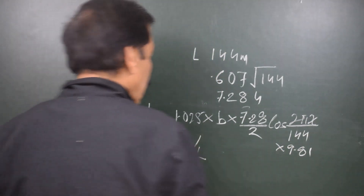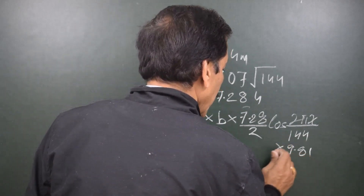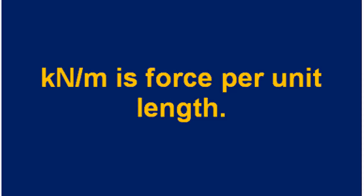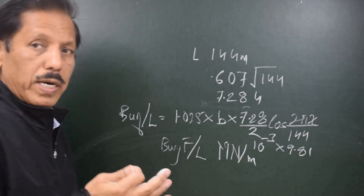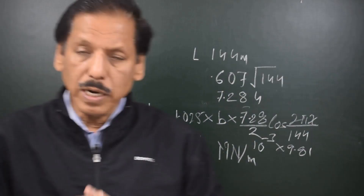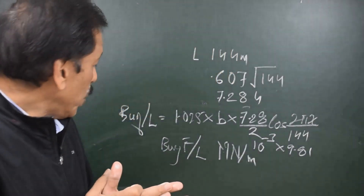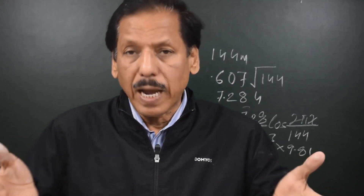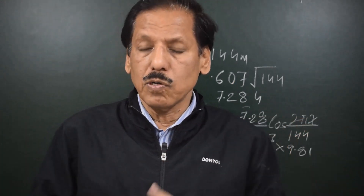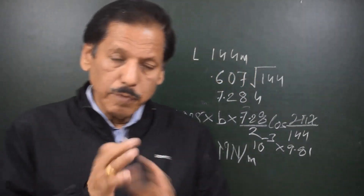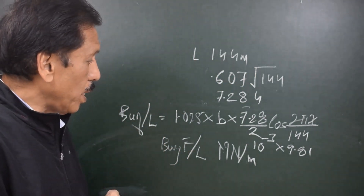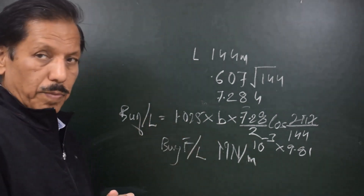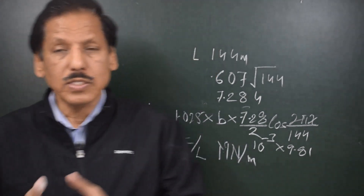This buoyancy per unit length provides additional shear force. Integrating the buoyancy per unit length gives shear force in mega newtons, and integrating the shear force gives bending moment. The boundary conditions applied are that shear force and bending moment are both zero at the ends of the ship. This wave-induced bending moment for a box vessel with block coefficient 1 then adds up to the static bending moment.